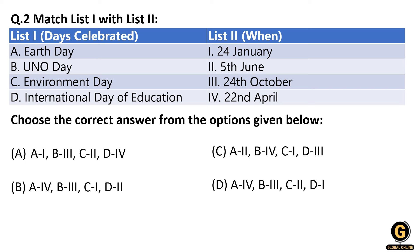The first thing we should know is Earth Day — it is celebrated on 22nd April. Environment Day is very famous and is celebrated on 5th June. So you should look for C–2 in the options. Options with C–2 are A and D. Since Earth Day is 22nd April, checking both pairs narrows it down directly.